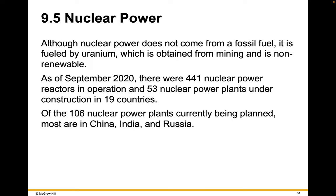Although nuclear power does not come from a fossil fuel, it is fueled by uranium, which is also obtained by mining, and that uranium is non-renewable. As of September 2020, there were 441 nuclear power reactors in operation and 53 nuclear power plants under construction in 19 countries. Of the 106 power plants currently being planned, most are in China, India, and Russia.